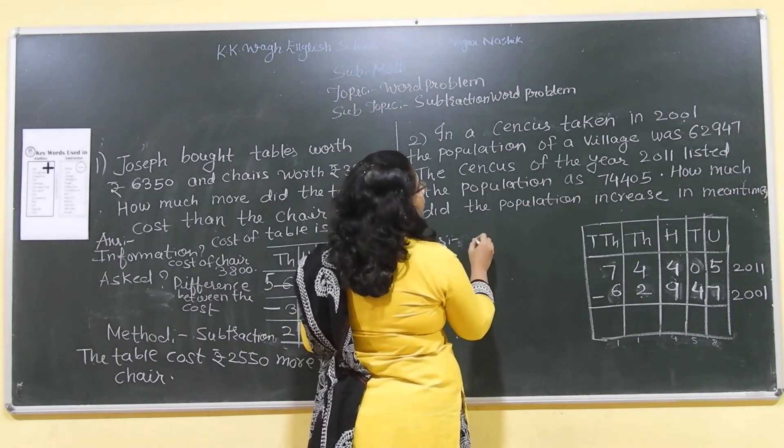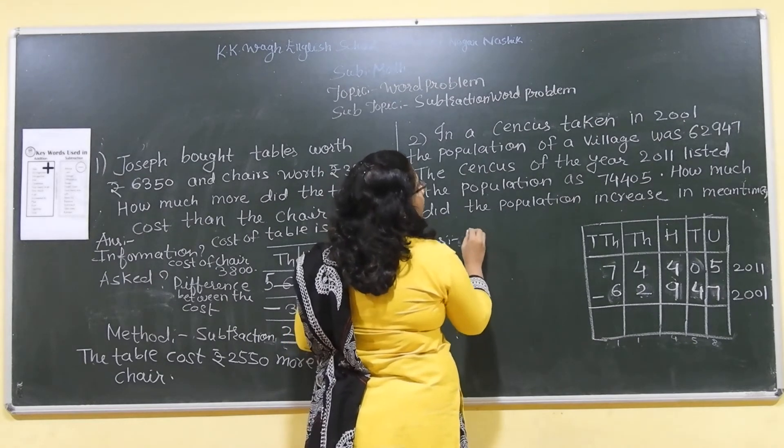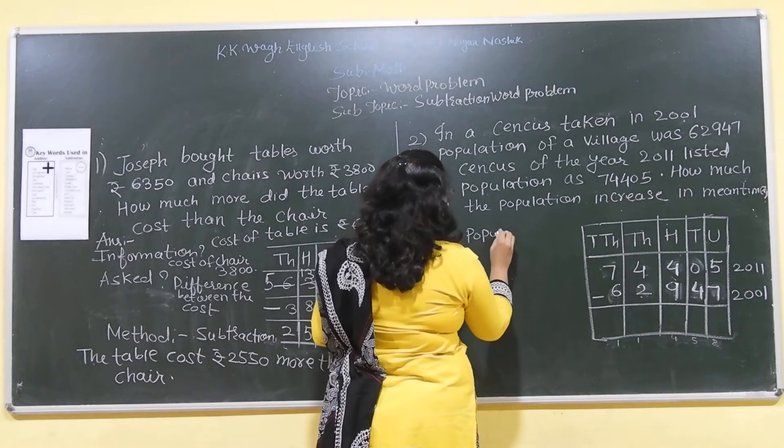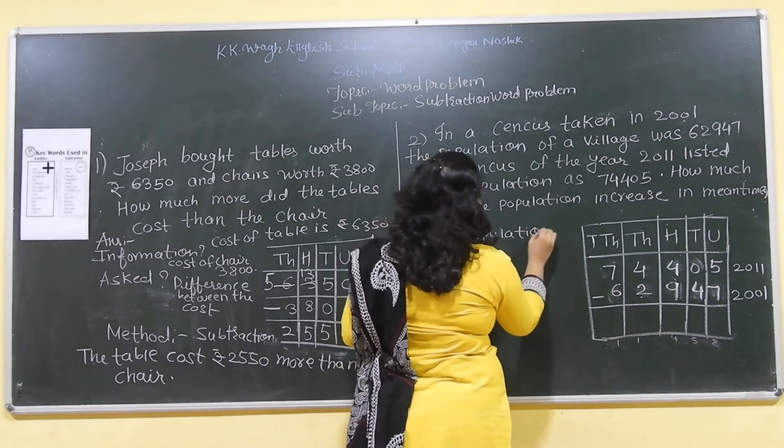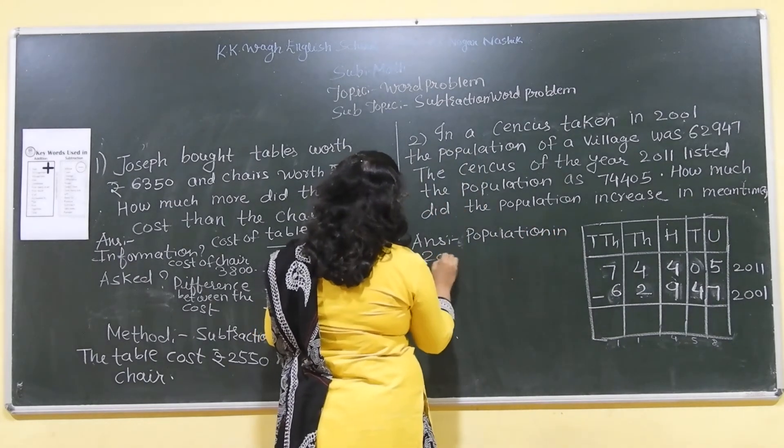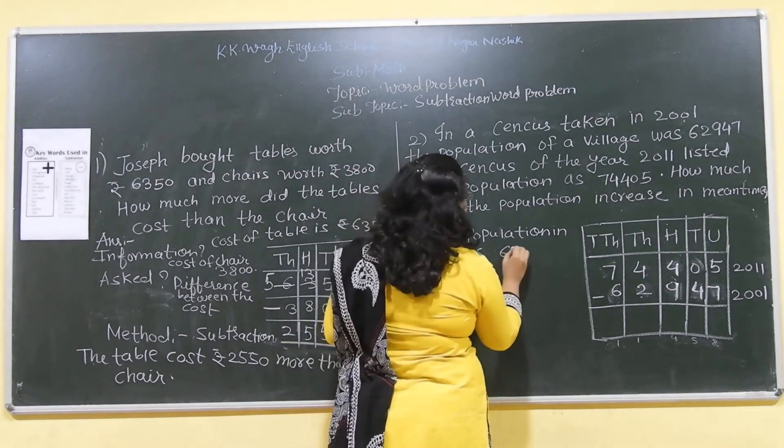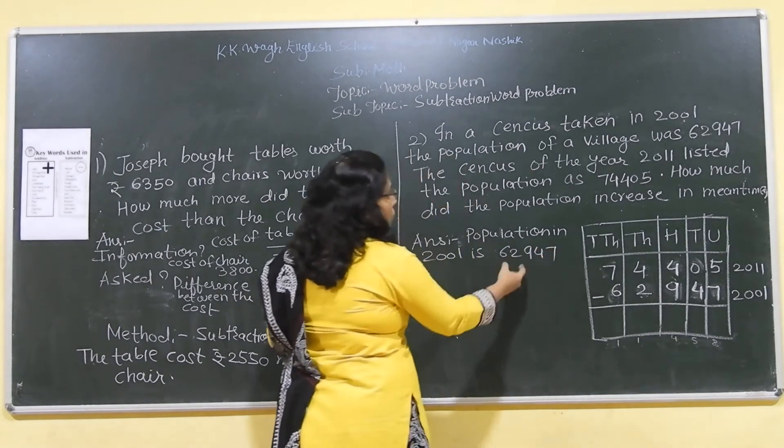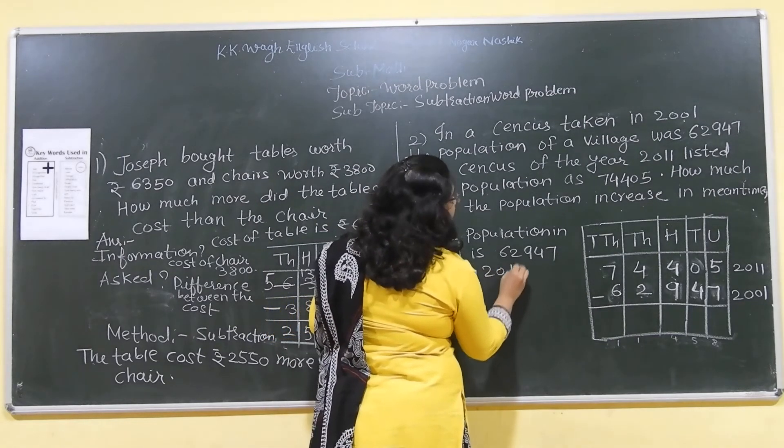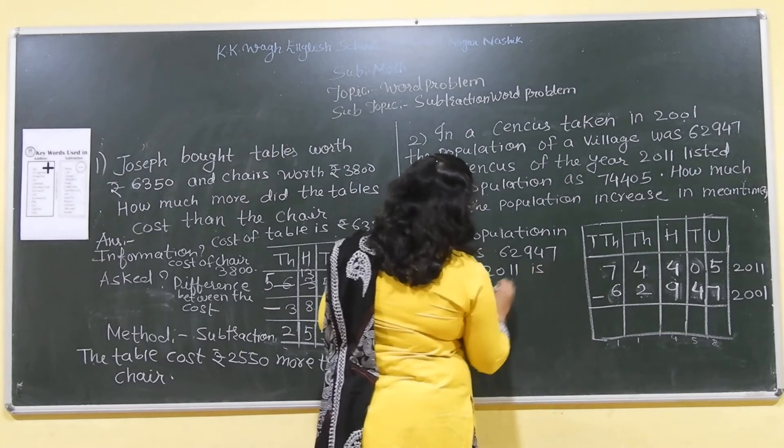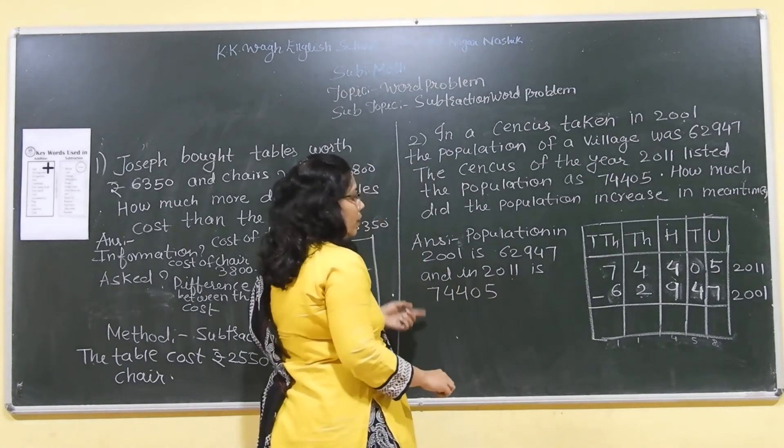The number of population in 2001. In 2001, population in 2001 is, this is the information given. Okay, 62947, that is 62947 and in 2011 is 74405.